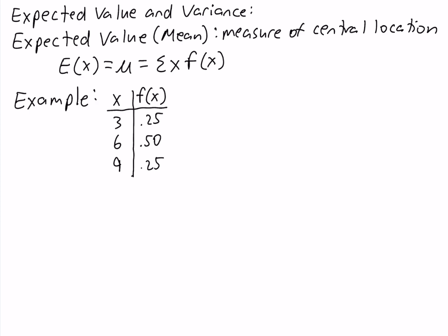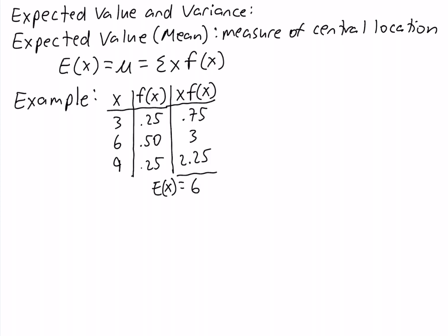To calculate the expected value, we can add another column to the probability distribution. This column is going to be the product of x and f of x. So 3 times 0.25 is 0.75, 6 times 0.5 is 3, and 9 times 0.25 is 2.25. To get the expected value, we simply sum the values in this column, which gives us 6. So our expected value is equal to 6.